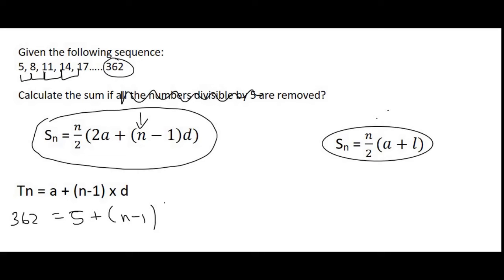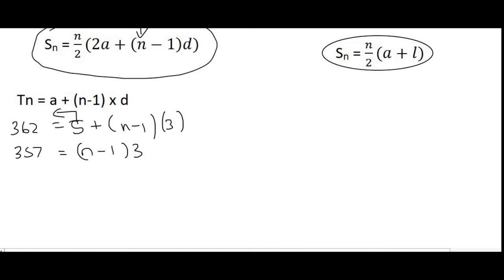and the common difference is 3. You then take the 5 over to the left, which gives you 357, equals to n minus 1 times 3.